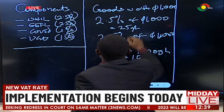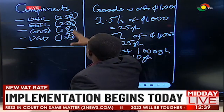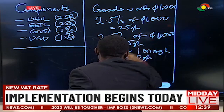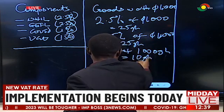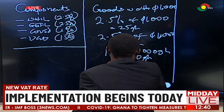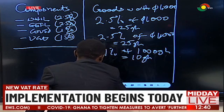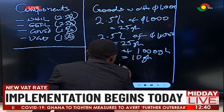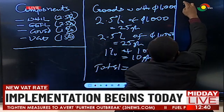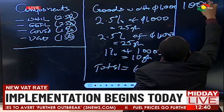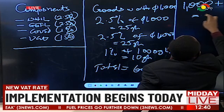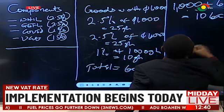Now what happens is that you add the totals of the various components. So the NHIL, which is 25 cedis, plus the GetFund, which is 25 cedis, gives you 50 cedis. Plus the 1% COVID levy of 10 cedis gives you a total of 60 Ghana cedis. Now you add that 60 cedis to your goods — the worth of the goods, which originally is 1,000 — so plus 60, then you have 1,060 cedis.